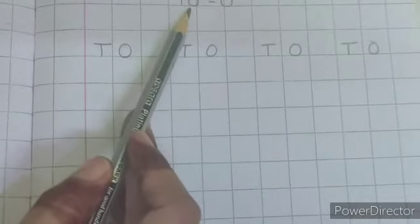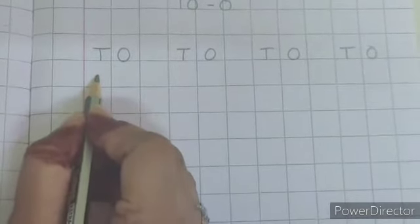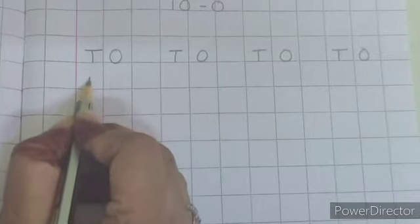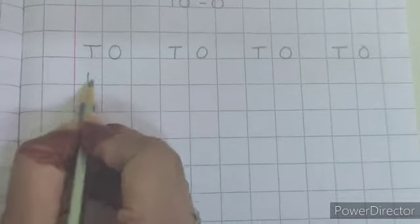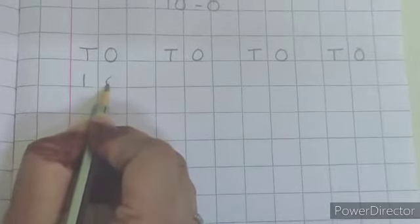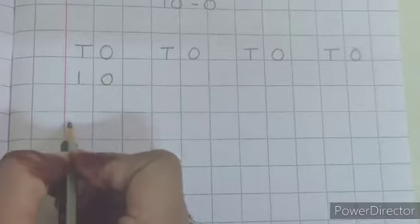So first we will write number 10. For 10, make standing line, touch the bottom line, 0, make a curve and reverse curve.